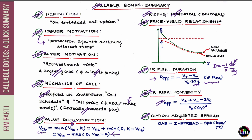Lastly, option-adjusted spread (OAS). The Z-spread is the spread required to match the market price of the bond assuming that the volatility of interest rates is zero. OAS equals Z-spread minus the value of the embedded option expressed in basis points per year. For a callable bond, our sign convention tells us that the value of the option is positive, and therefore the OAS of a callable bond is less than the Z-spread of a callable bond. That is the key takeaway to remember. So this was a quick look at the various features of a callable bond that we need to keep in mind.